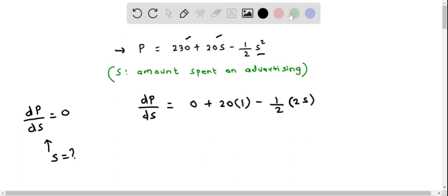We can simplify this. We can cancel this 2 and 2, and 20 times 1 is 20, minus 1 times S is S. So we have 20 minus S. This is the derivative of P with respect to S.